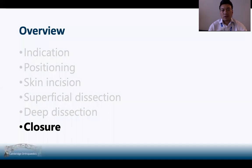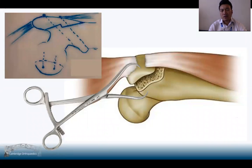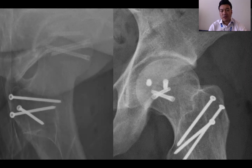The final stage is closure. It is really important to securely fix your osteotomy. The step osteotomy makes it slightly easier to reduce. I use a pointy reduction clamp to reduce the osteotomy and then 3.5 millimeter screws with or without washers to secure it in place. It's important to do this carefully so you don't fracture the trochanteric fragment. This post-op x-ray demonstrates headless screws in the femoral head for the Pipkin fracture, and 3.5 millimeter screws securing the osteotomy in place.